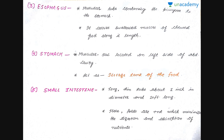The next organ in sequence is the small intestine. It is a long thin tube about 1 inch in diameter and 10 feet long. This small intestine is very important because few folds are present here. These folds maximize digestion and absorption of nutrients. About 90% of the absorption of nutrients takes place in the small intestine due to the presence of these folds.